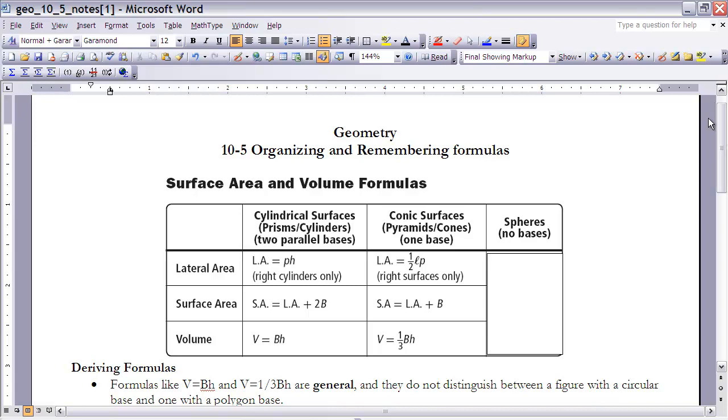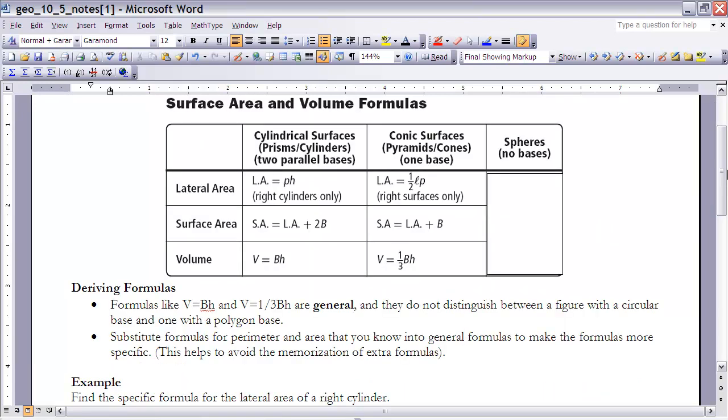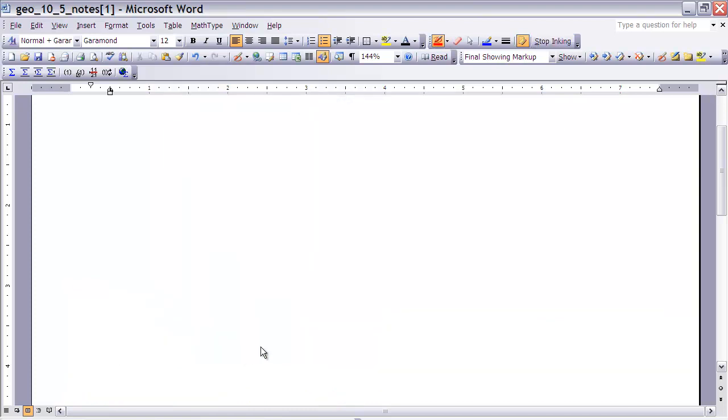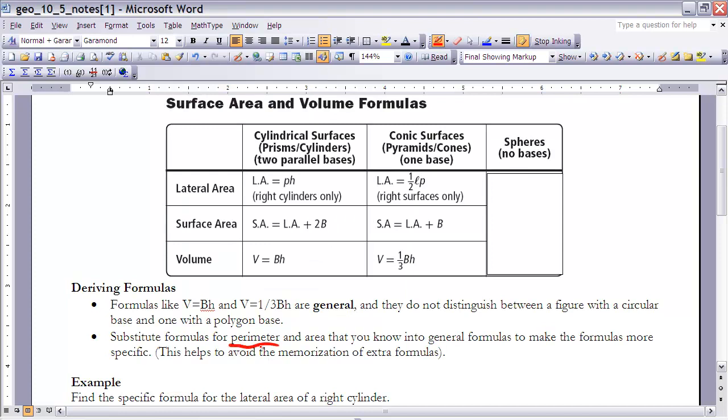To derive these formulas, what we do is the following. It says formulas like volume equals base times height or volume equals one-third base times height are general. They don't distinguish between a figure with a circular base or one with a polygon for its base. So what we need to do is we're just going to substitute in formulas for perimeter and formulas for area into those general formulas to make the formulas more specific.